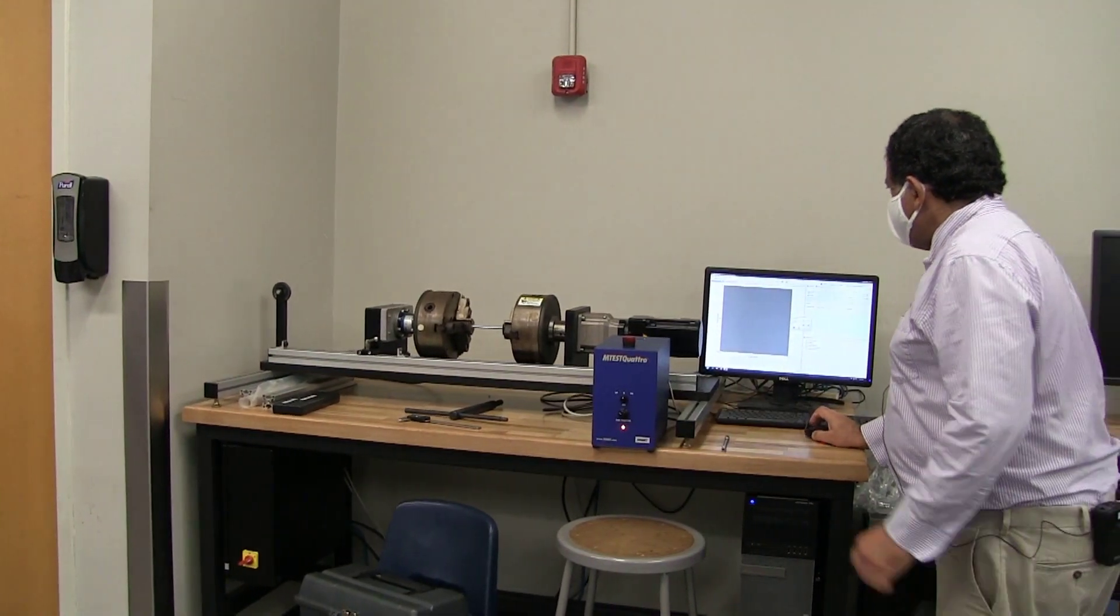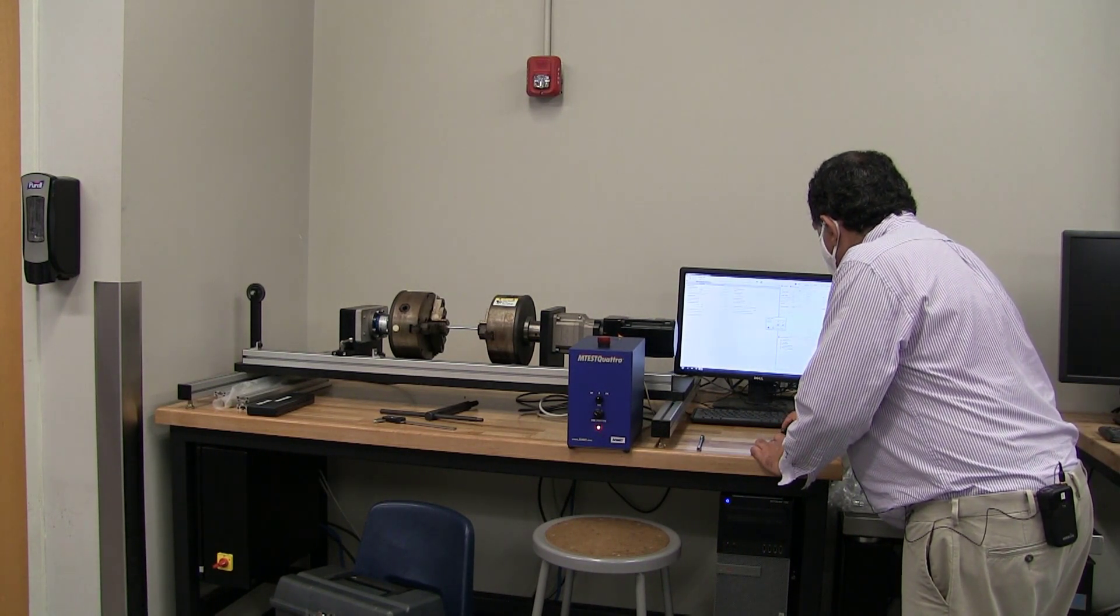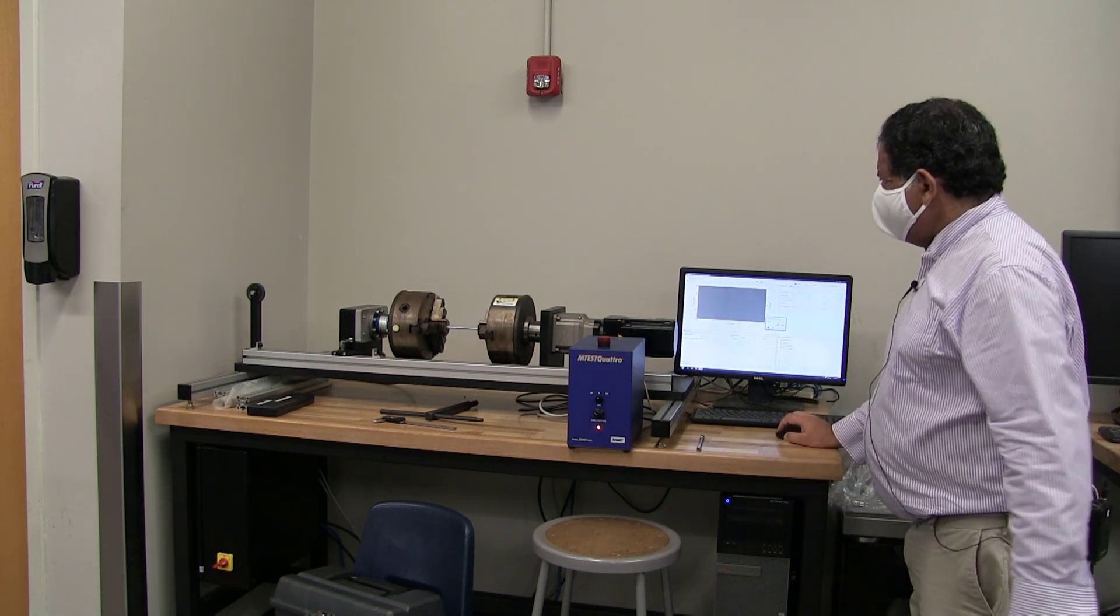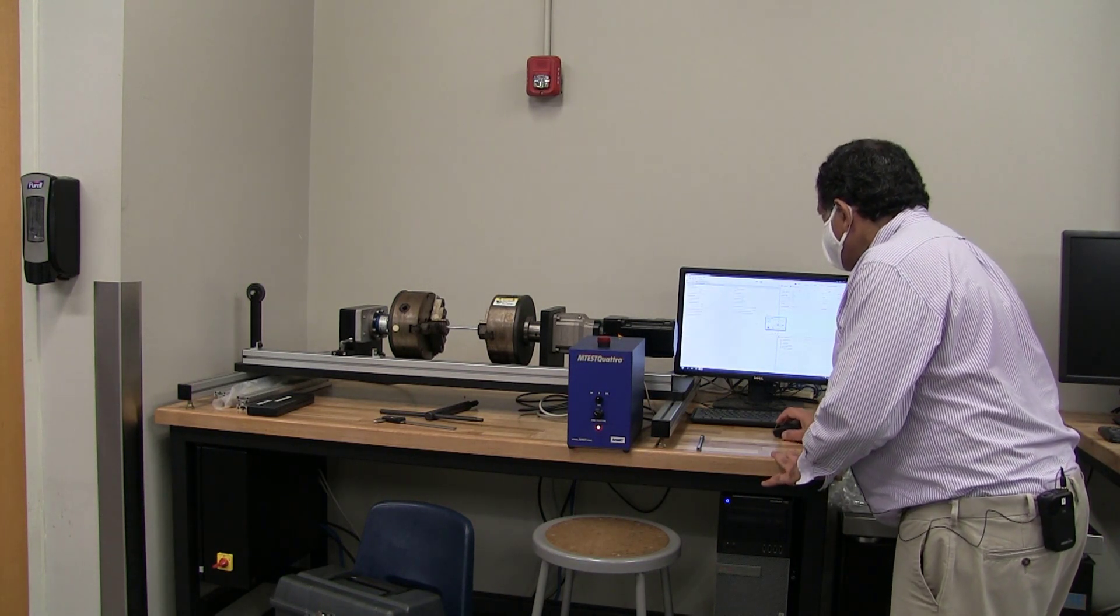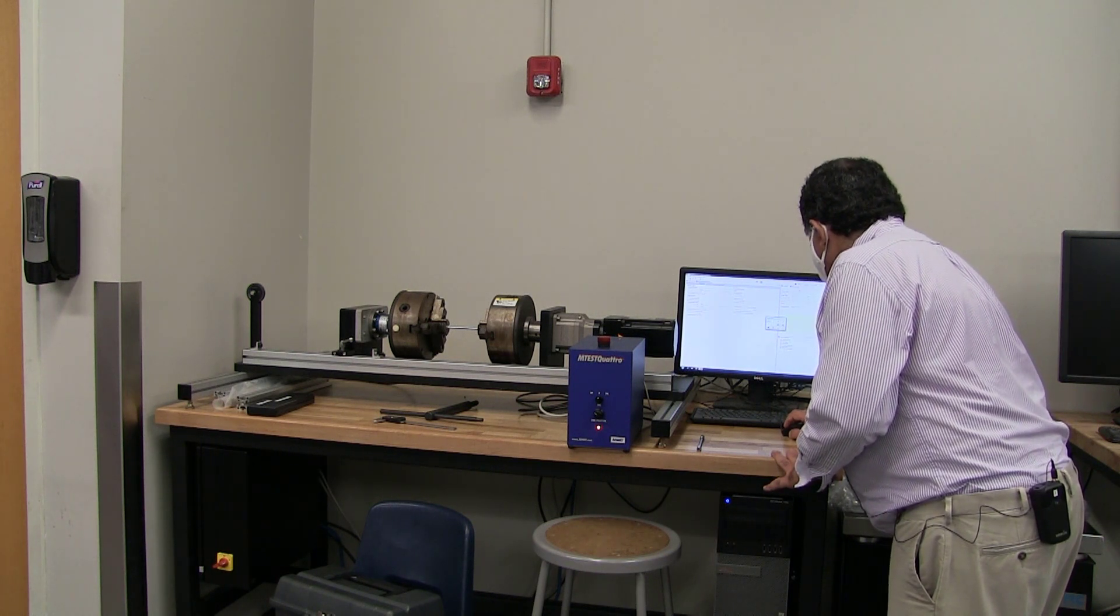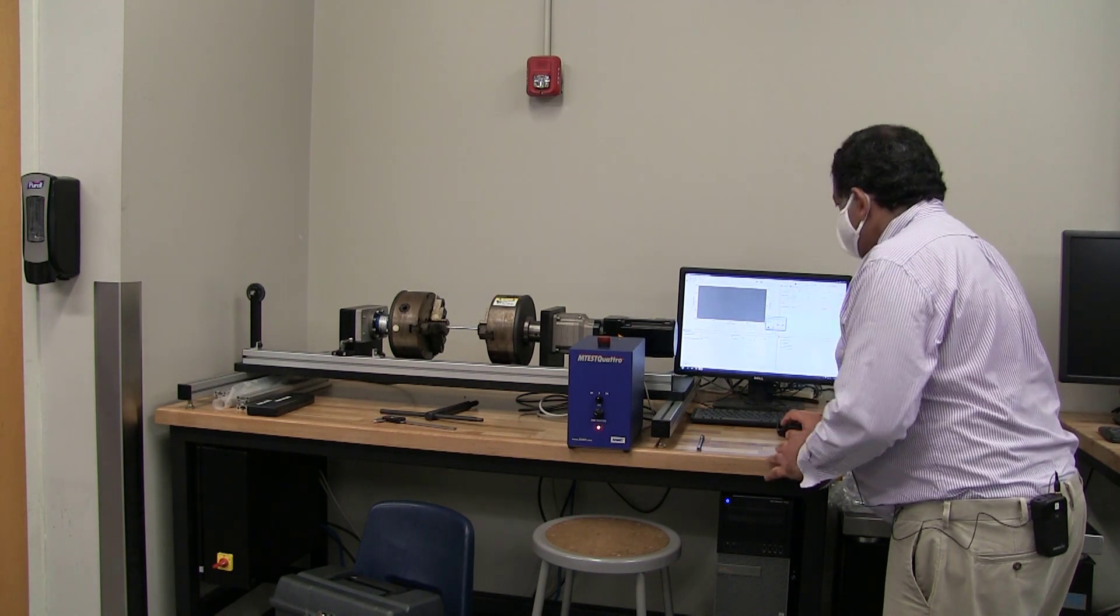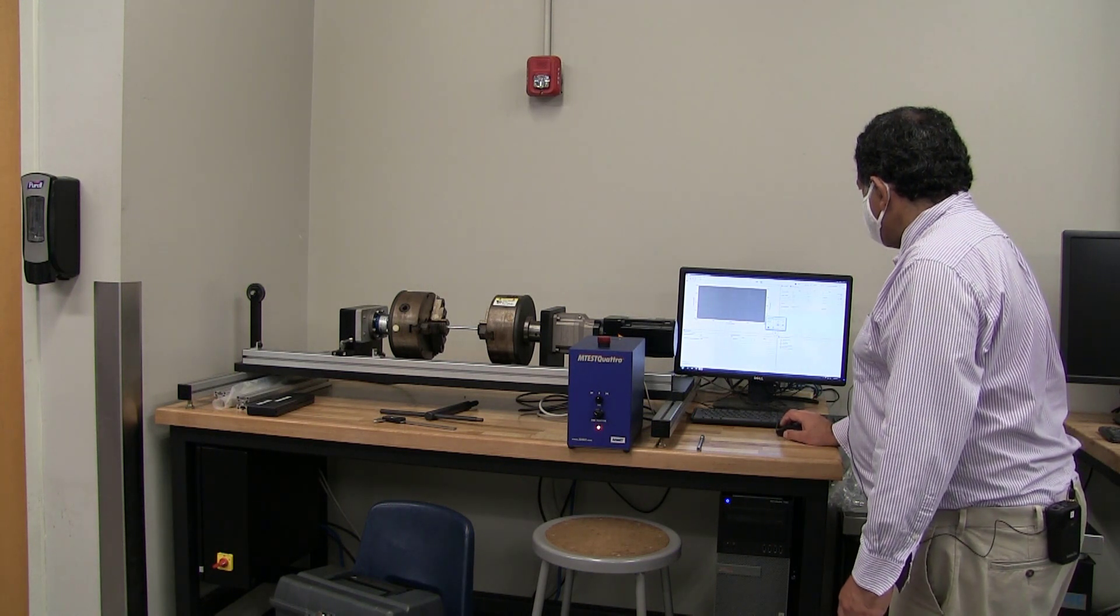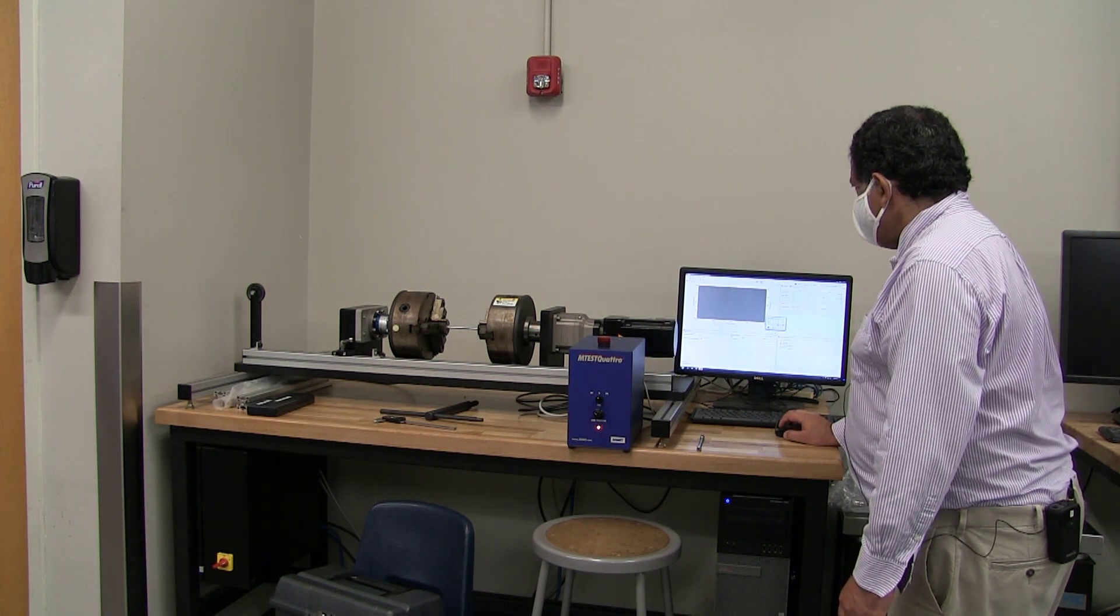We're going to come over here. We're going to click on the specimen properties. We're going to put in the gauge length of the specimen and the material for the specimen. Then I'm going to zero the angle so that the angle of twist starts from zero.